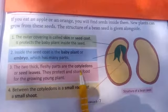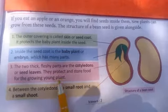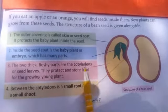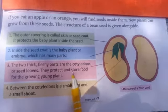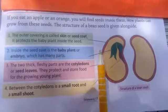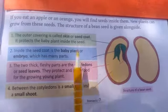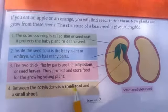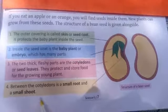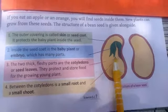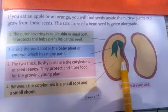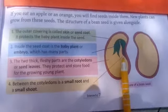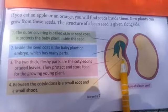The cotyledons protect and store food — the main function of the cotyledons is storing food for the baby plant. Between the cotyledons is a small root and a small shoot. Here is the presence of the small root and small shoot.